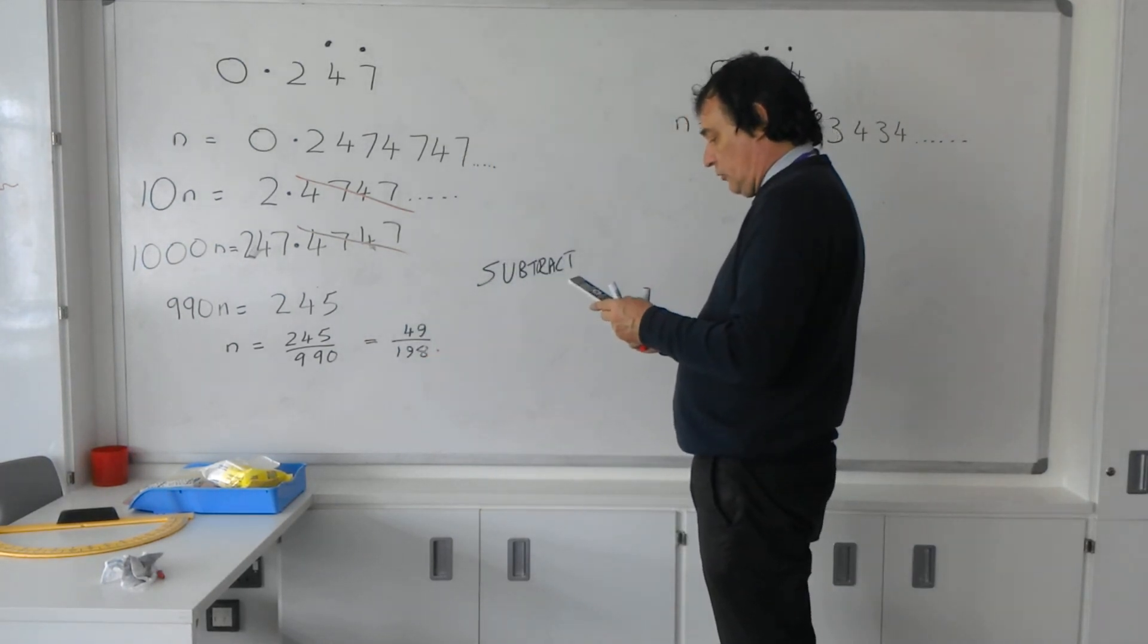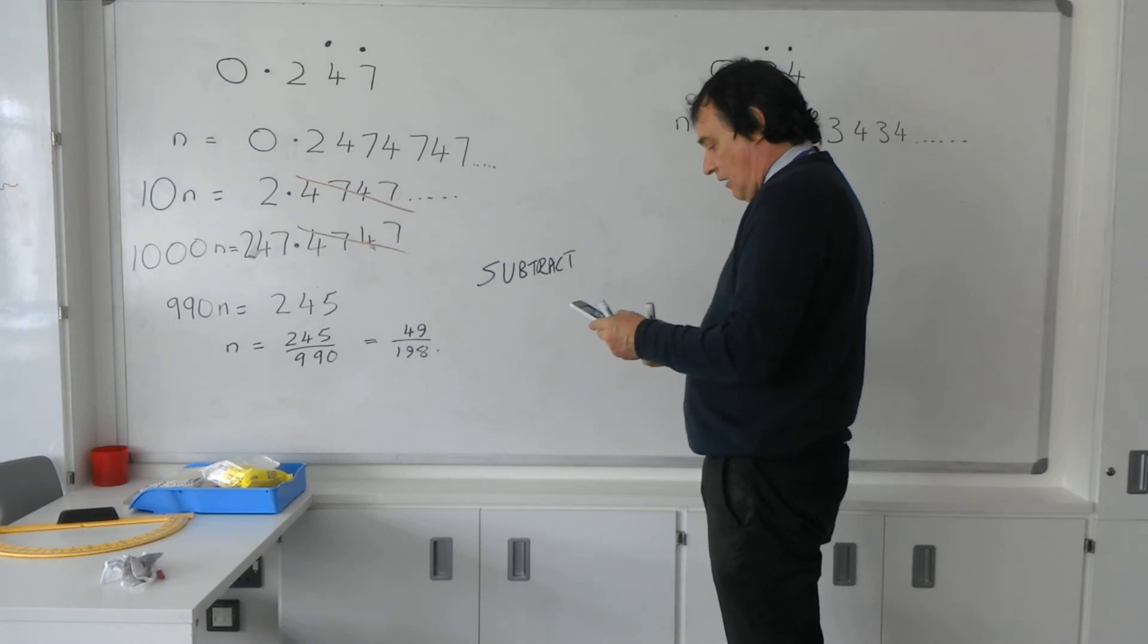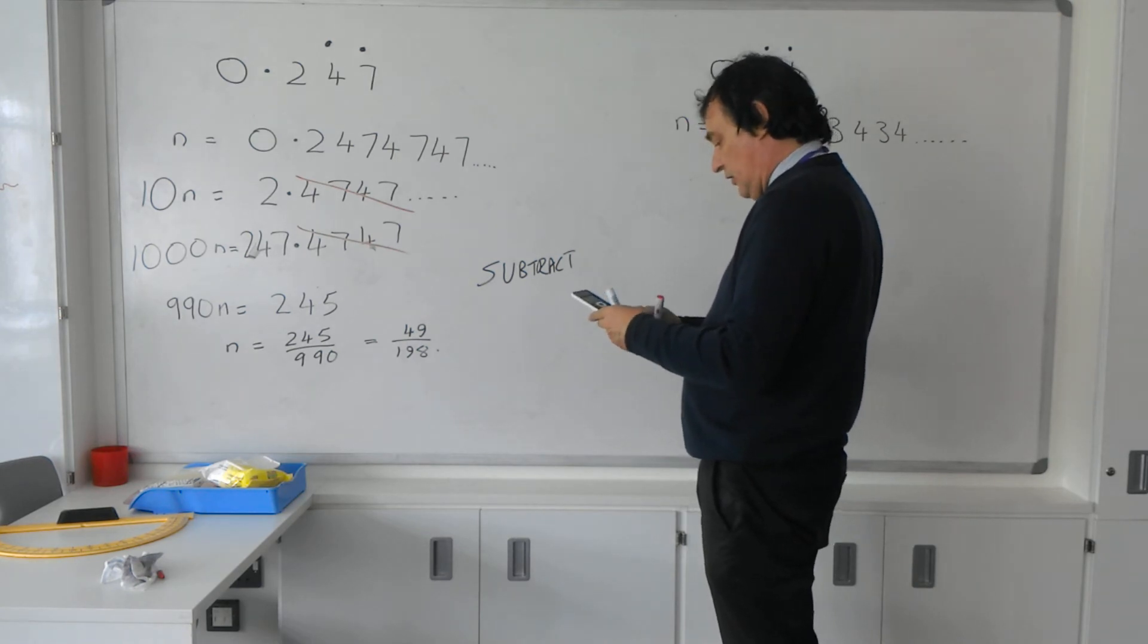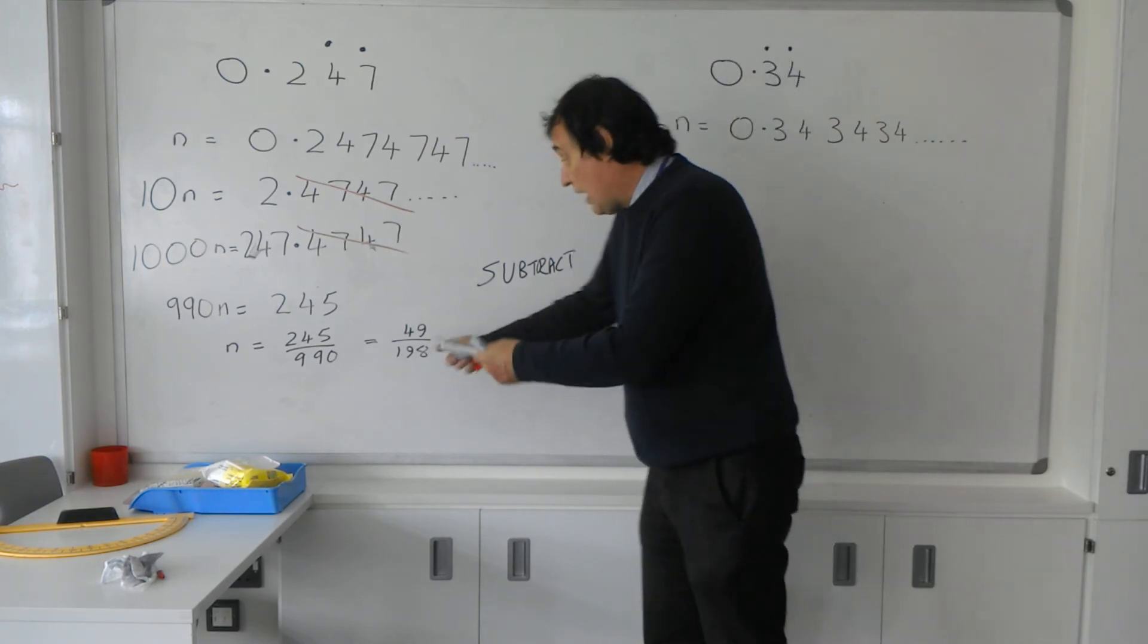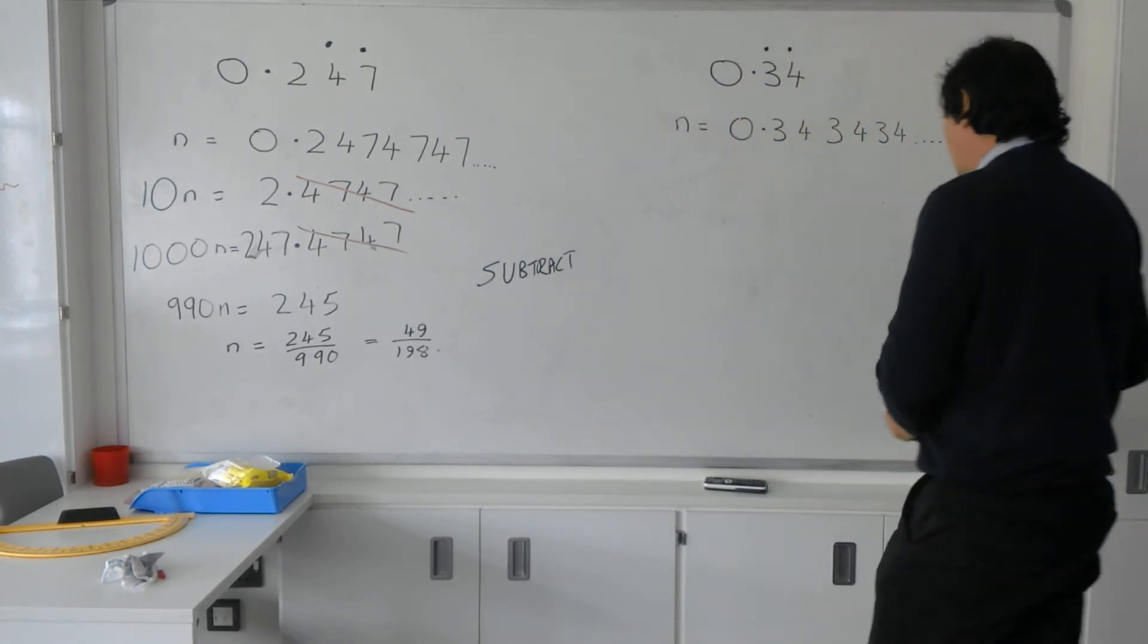In fact, I'll let it go. So 245 over 990 equals 49 over 190. We've cancelled fully. So you'd express it like that.